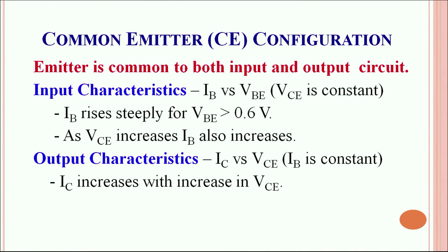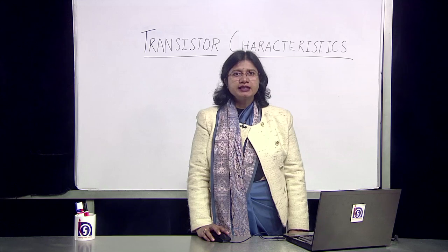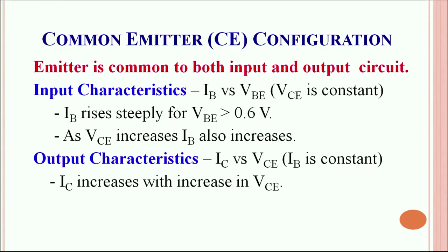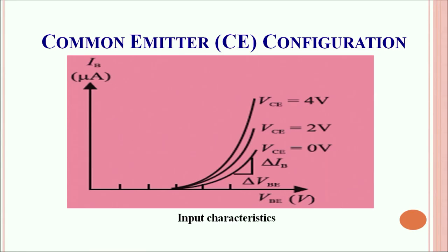Similarly, the output characteristics are plotted as a function of the collector current with respect to the collector-emitter voltage, keeping base current as a constant. The collector current increases with the increase in the collector-emitter voltage.